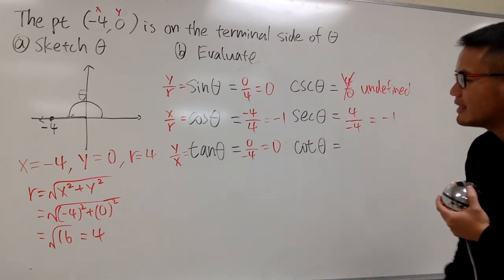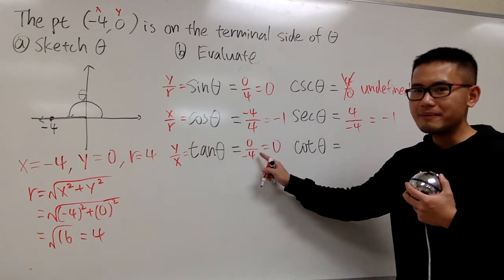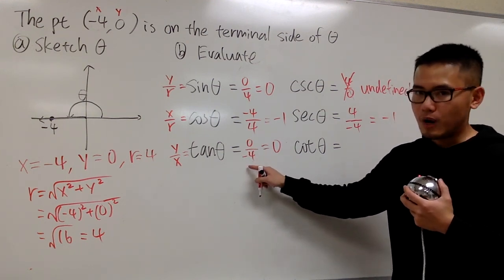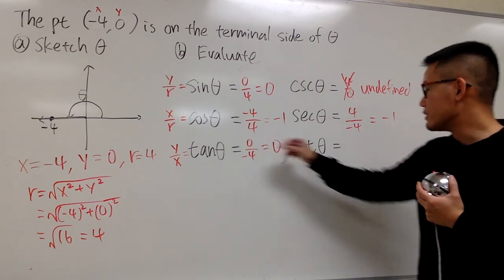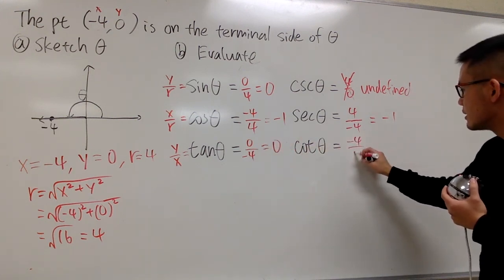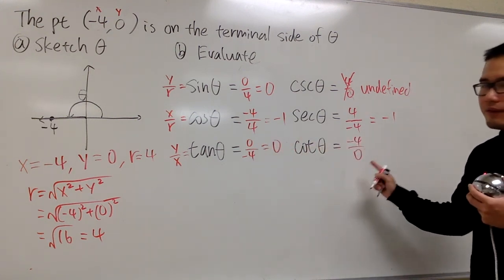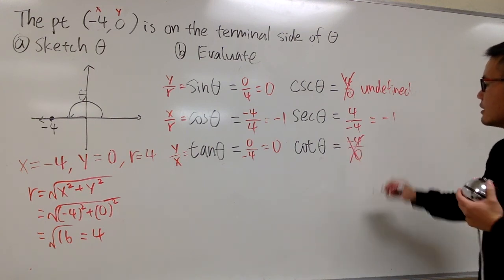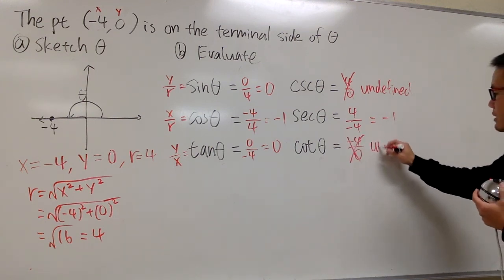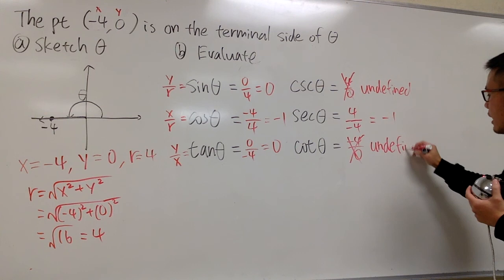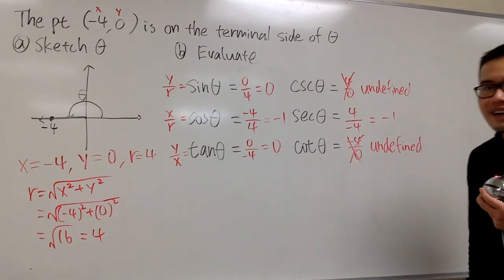And cotangent θ, in this case, I will look at this, okay? It will be x over y, right? The reciprocal of that. But it's just -4 over 0 in this case. And I also have 0 in the denominator in this case. So, this is bad. The response to this, it will be undefined for cotangent θ.